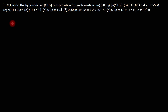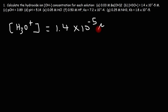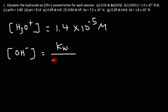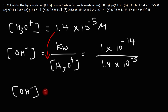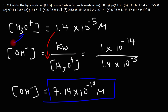Now let's move on to part B. We're given the H₃O⁺ concentration, which is 1.4 × 10⁻⁵. The hydroxide concentration is going to be Kw divided by the H₃O⁺ concentration. Kw is the auto-ionization constant of water and at 25°C it's 1 × 10⁻¹⁴. Plugging in the hydronium ion concentration of 1.4 × 10⁻⁵ and dividing gives us 7.14 × 10⁻¹⁰.